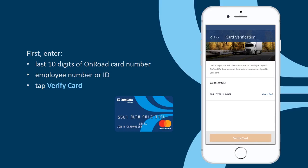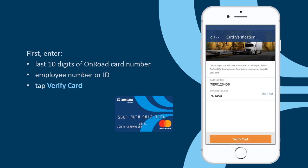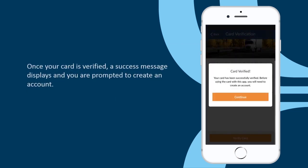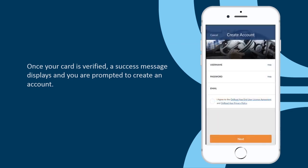First, enter the last 10 digits of your OnRoad card number, your employee number or ID, and tap Verify Card. Once your card is verified, a success message displays and you are prompted to create an account.